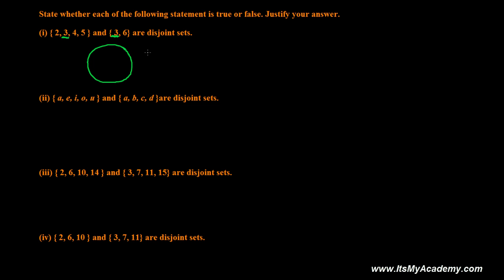It's something like this. If this is set A and this is set B, then 3 is common between both. Here we'll be left with 2, 4, and 5, and here we'll be left with 6. Since 3 is sitting here, it's false. It's not Disjoint, it's Intersecting Sets.